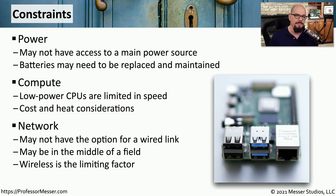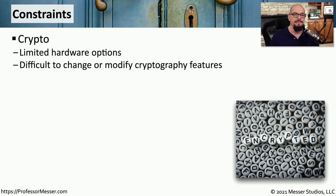There may be trade-offs as to the type of network and the speeds available to communicate to that embedded device. These low-cost embedded devices also don't have a lot of additional cryptography capabilities. There is a CPU, but that CPU is limited, and there's usually no additional cryptography hardware on that device unless it's been designed that way from the very beginning.